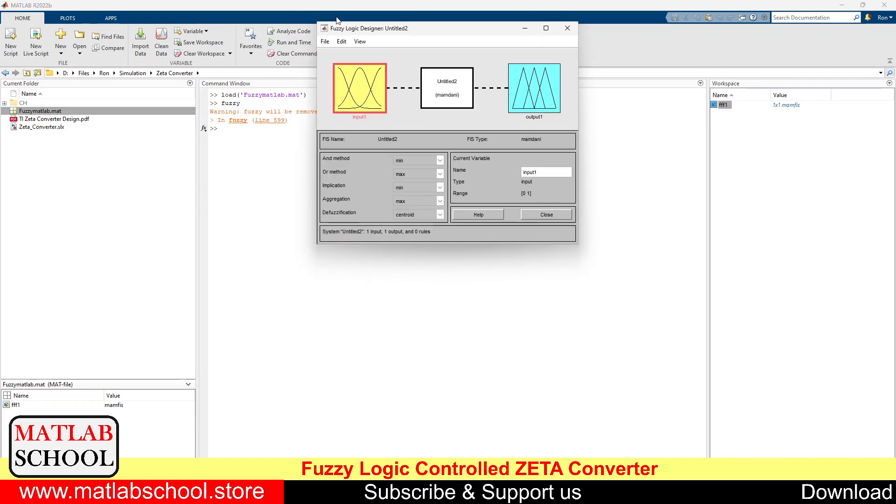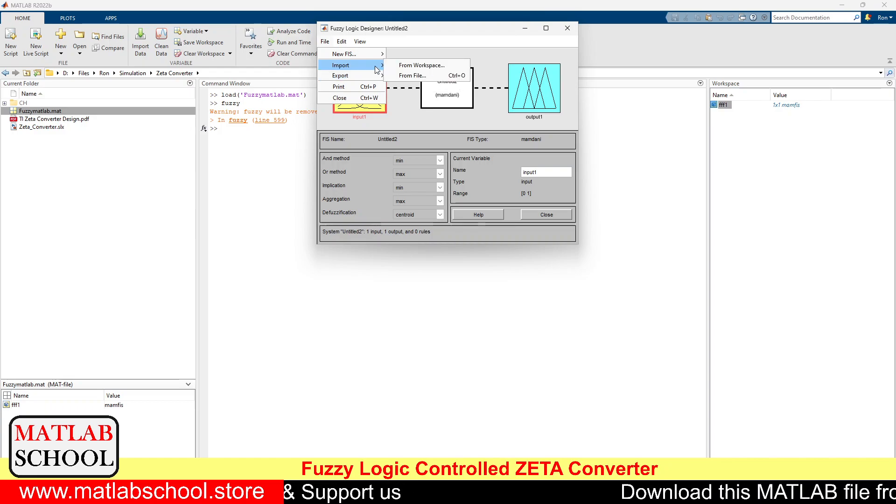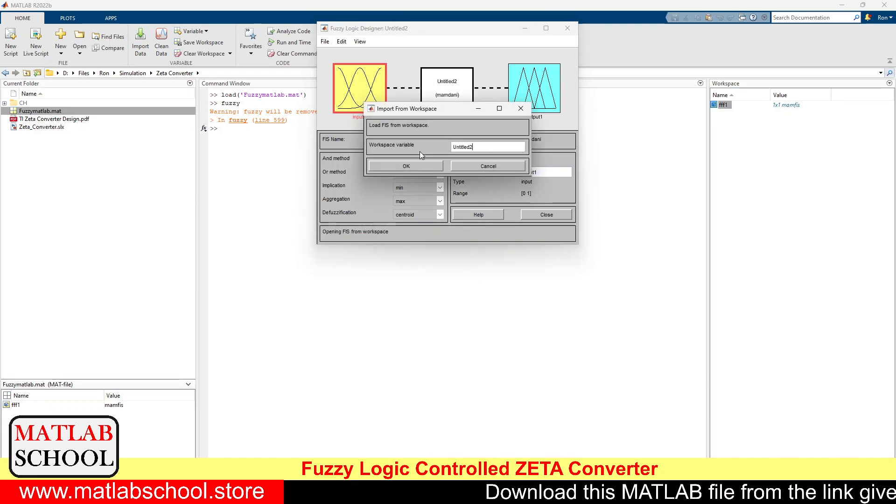So to open the fuzzy, you type 'fuzzy' here. You can import the model from workspace, so you give the name FFF1.